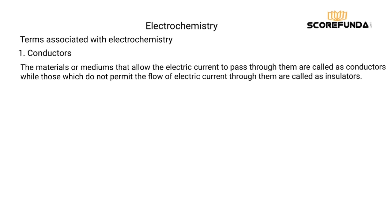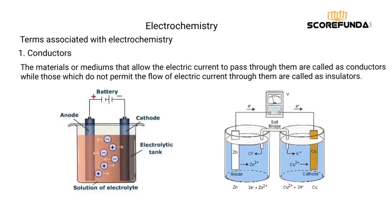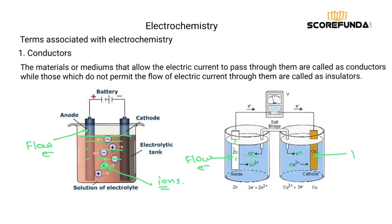In an electrolytic cell or electrochemical cell, inside there are rods. Through these rods there is a flow of electrons. When we have the electrolyte solution inside, ions move through the solution. So current conduction in conductors may be because of the flow of electrons or the flow of ions.